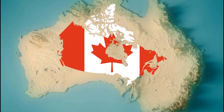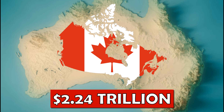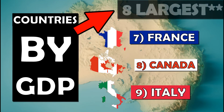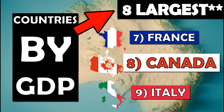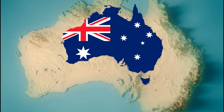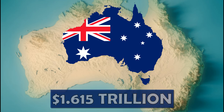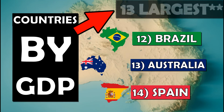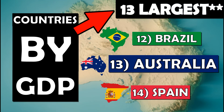Canada's GDP is 2.24 trillion, making it the 15th largest economy in the world. Australia's GDP is a bit lower at 1.615 trillion, making it the 20th largest economy.